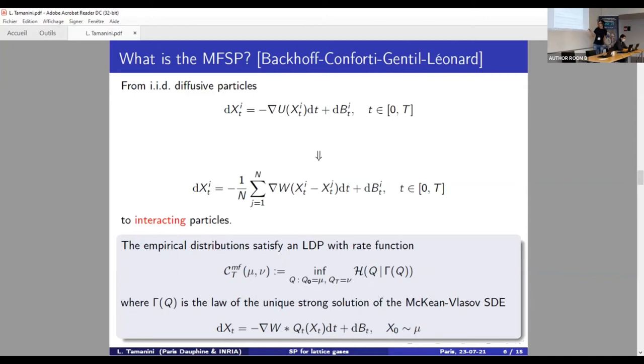And again, the rate function reads as an entropy minimization problem, a bounded entropy minimization problem, even if the reference measure, due to this interaction potential W, this interaction term W, is more complicated since the reference measure depends on the argument Q in the following way. So in particular, the reference measure is the law of the unique strong solution of the McKean-Vlasov SDE written here below, which essentially is the dynamic driving the particle system with initial condition μ, while here the optimal one essentially has to solve the same dynamics but with both initial and final constraints.